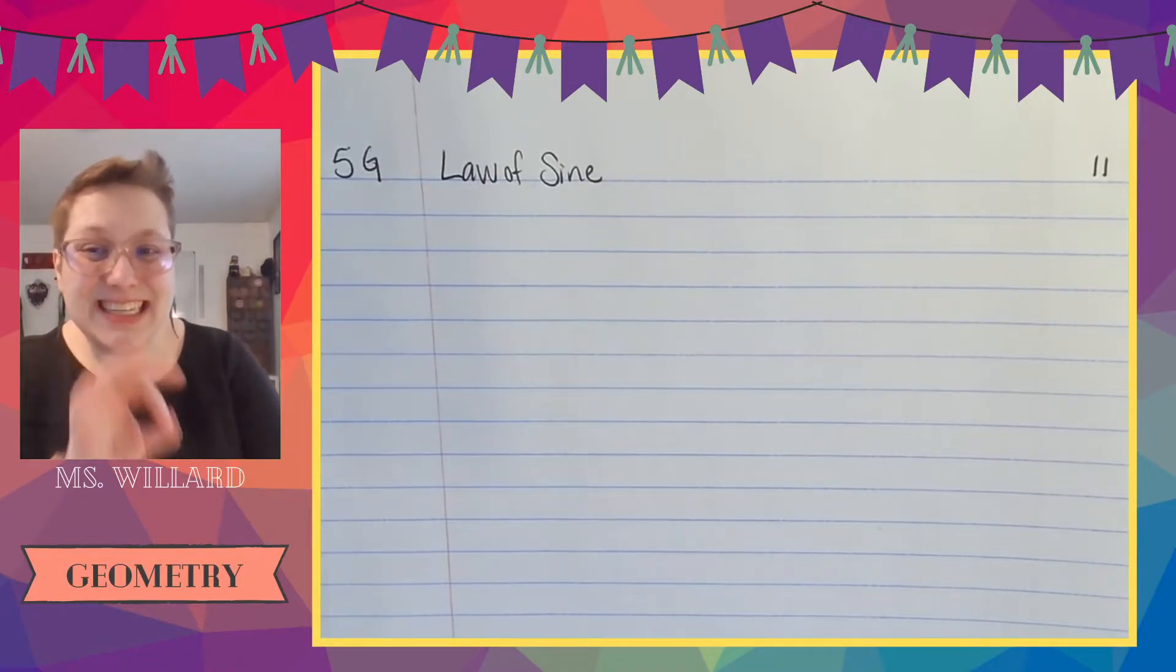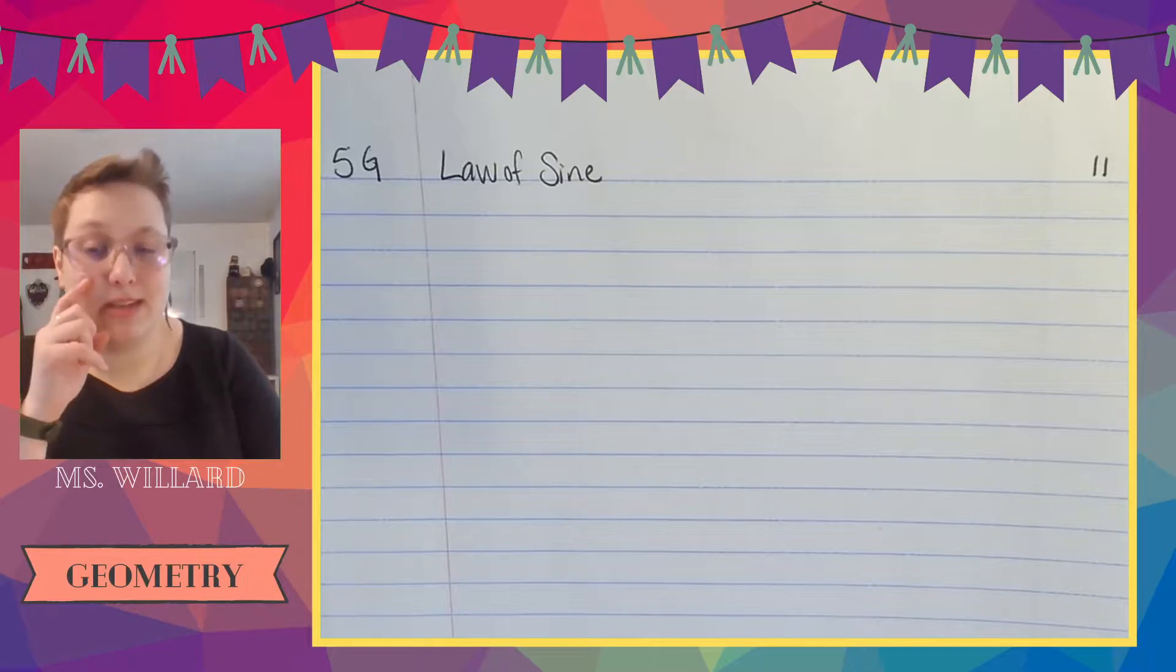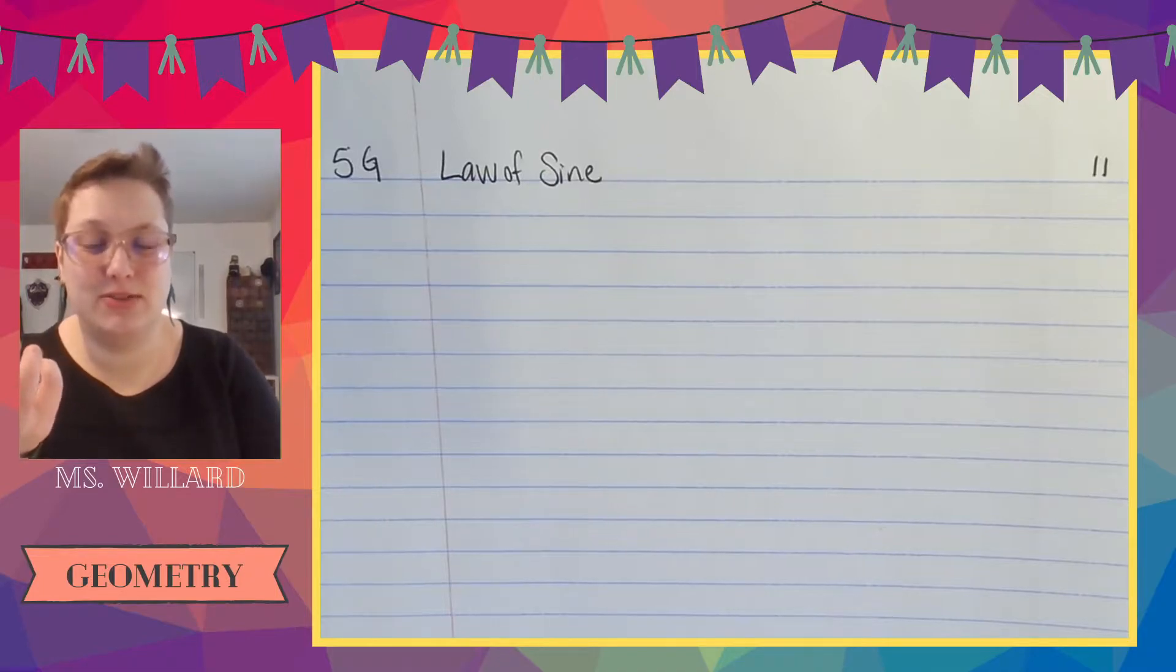But they both work for non-right triangles. They work for any triangle technically but we use them for non-right triangles which means triangles that are not a right triangle because we have things for right triangles. Pythagorean theorem and Sohcahtoa. So we don't need those. We have this for non-right triangles.